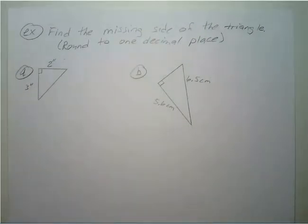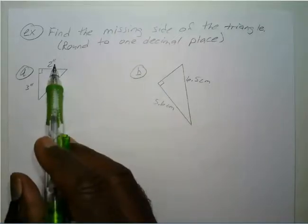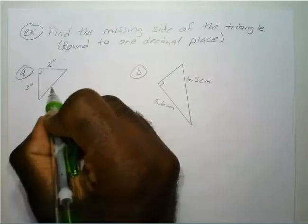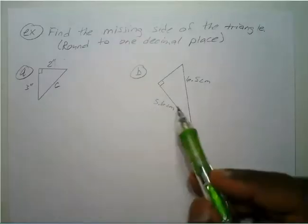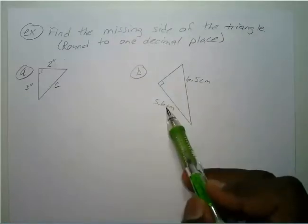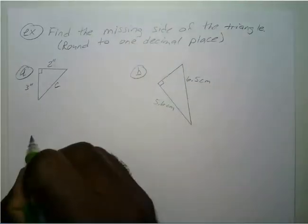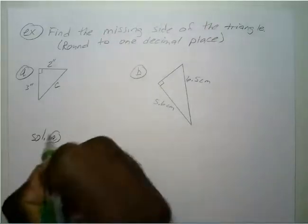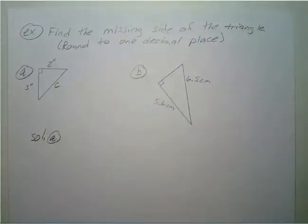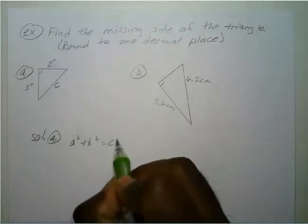What if you wanted to find the missing side of the triangles, rounded to one decimal place? For this right triangle you have three inches on one side, two inches on another, and the hypotenuse C is unknown. Since we know they're both right triangles, we're going to use the Pythagorean theorem: A squared plus B squared equals C squared. We know the hypotenuse is opposite the right angle, so we'll let A equal 2 and B equal 3.